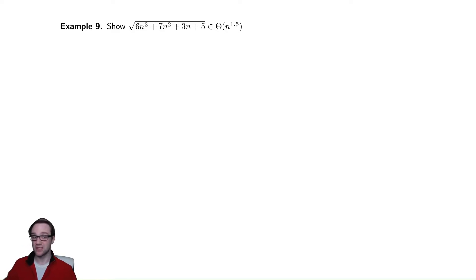In this case, we're going to show that this ugly-looking square root is in theta of n to the 1.5, meaning that it looks like n to the 1.5.